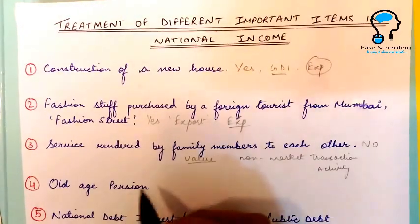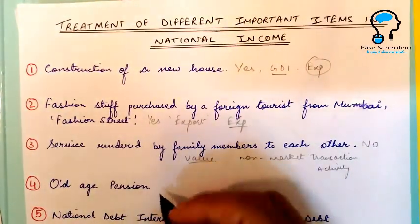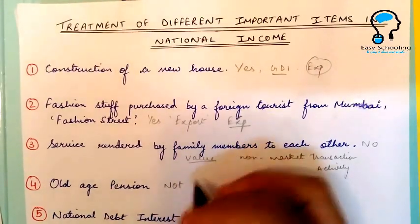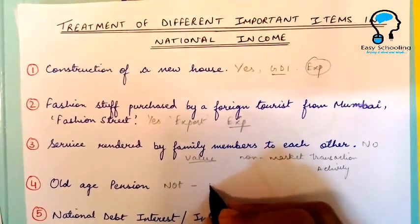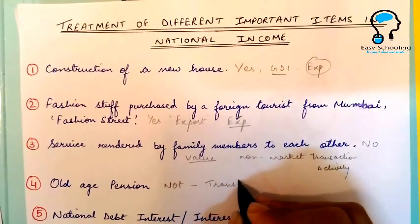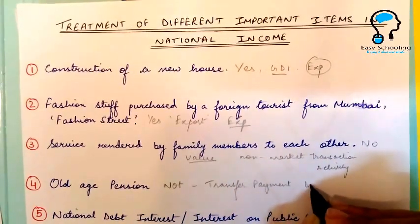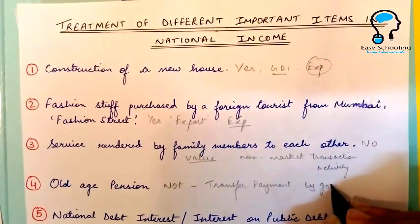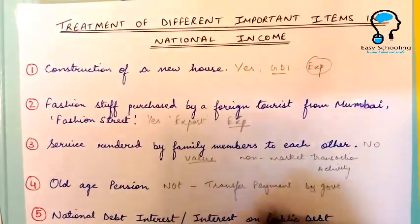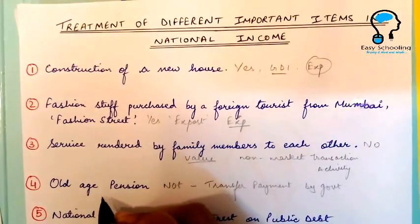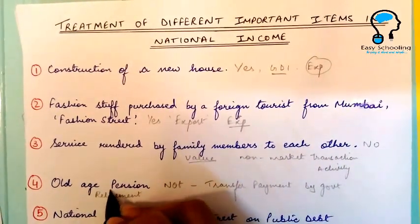Next is old age pension. Old age pension is not included in national income because it is a transfer payment by the government.